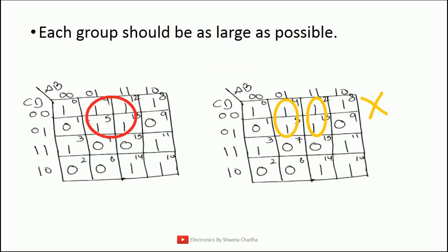Each group should be as large as possible. For example, we can have a group of 4 using these 4 elements, so we are not going to make 2 separate groups of 2. If we are able to go for a group of 4, why make 2 separate groups of 2 entries? The group size must be maximum — start from the highest value. In a 4-variable K-map with 16 combinations, start with 16 (not possible), then try 8 (not possible), then 4 (which is possible). We go for a group of 4 rather than 2, because choosing a larger group gives a more simplified answer.